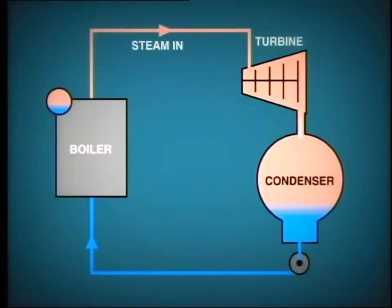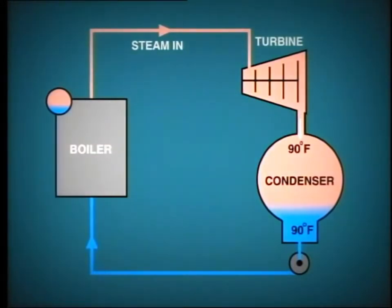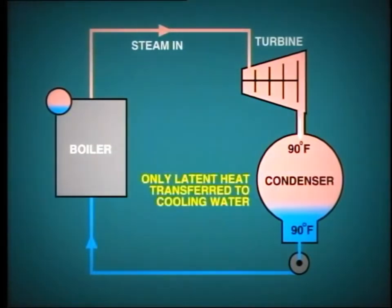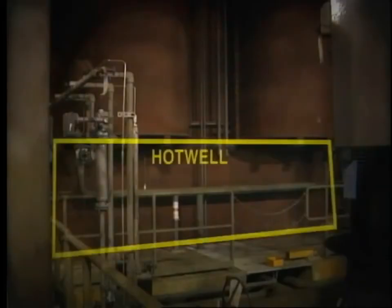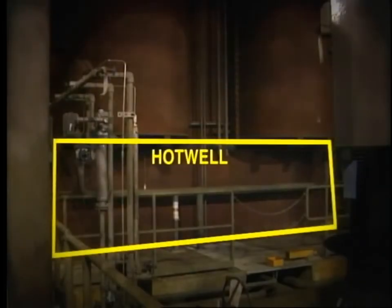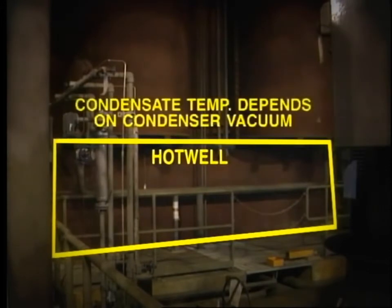The condensate collecting in the bottom of the condenser will ideally be at the same temperature as the steam exhausting from the turbine. In this situation, it is only the latent heat that is transferred from the steam to the condenser cooling water as the steam condenses. The actual temperature of condensate in the hot well is probably within the range of 80 to 100 degrees Fahrenheit, depending upon the vacuum in the condenser, and this in turn is dependent upon other conditions such as cooling water temperature.